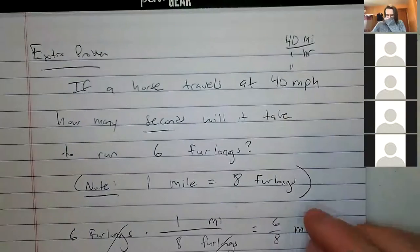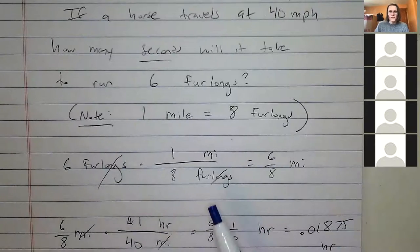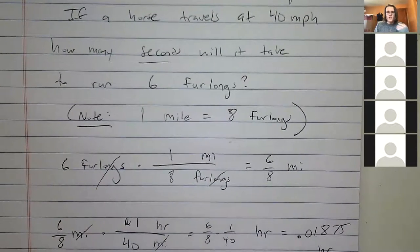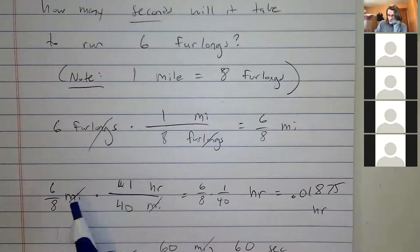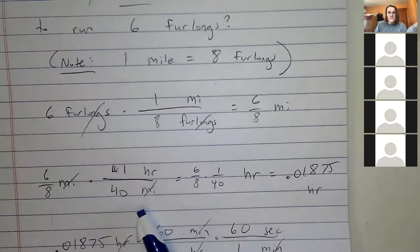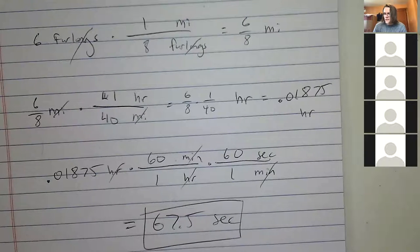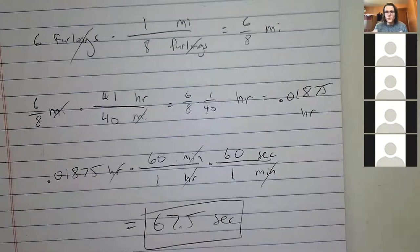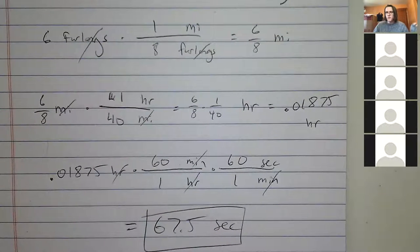Summary of the approach: first, convert furlongs to miles since everything else was in miles. Restate the problem as: how long to go 6/8 mile at 40 mph? Divide the distance by the speed to get time in hours, then multiply by 60 × 60 to convert to seconds. The units guided every step — you structure the conversion factors to produce the units you want, and the numbers fall into place.